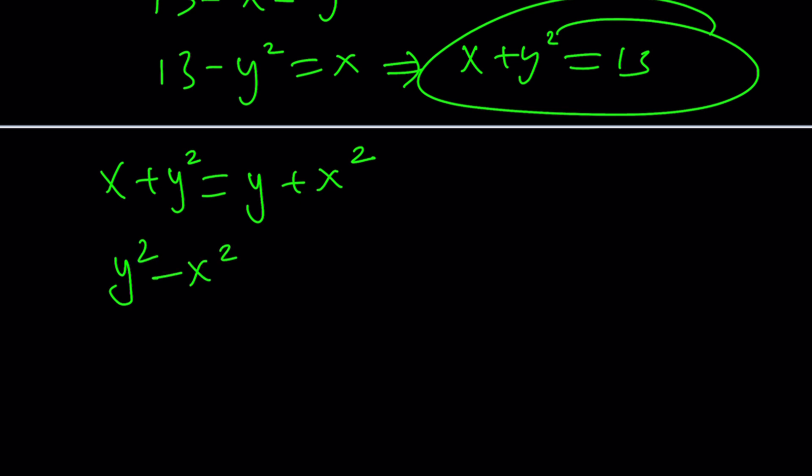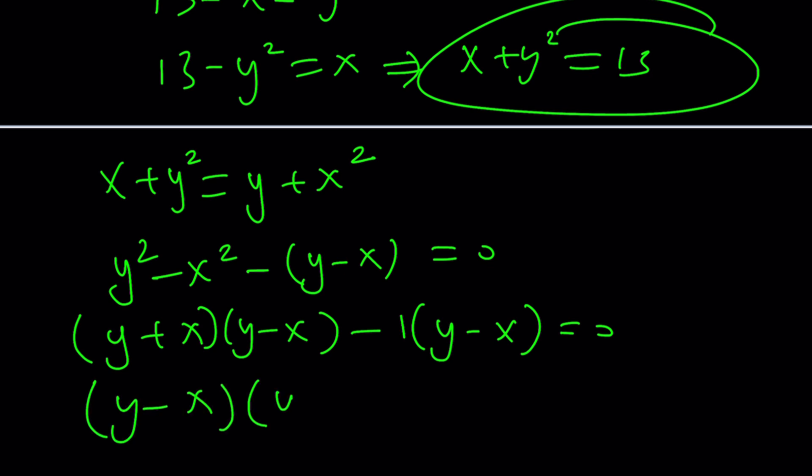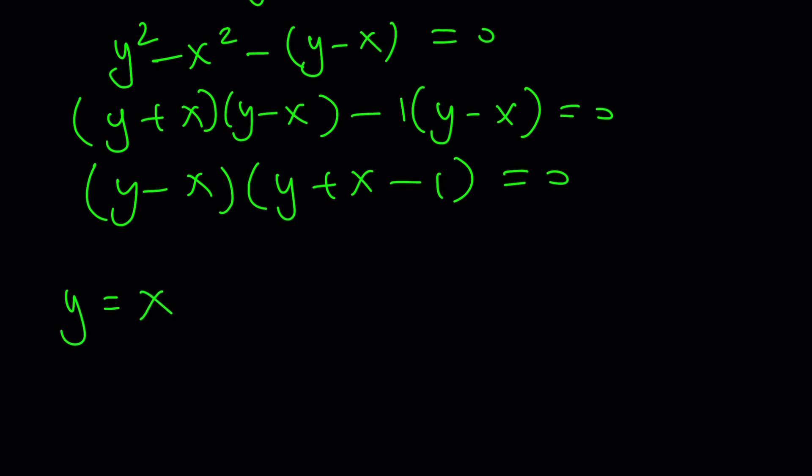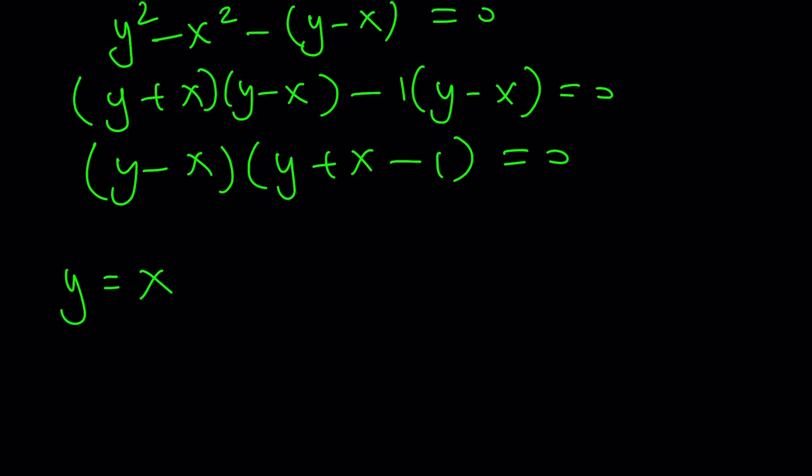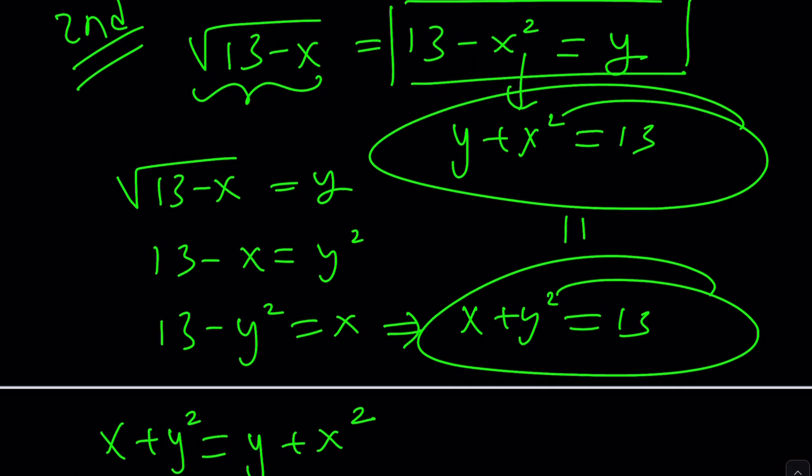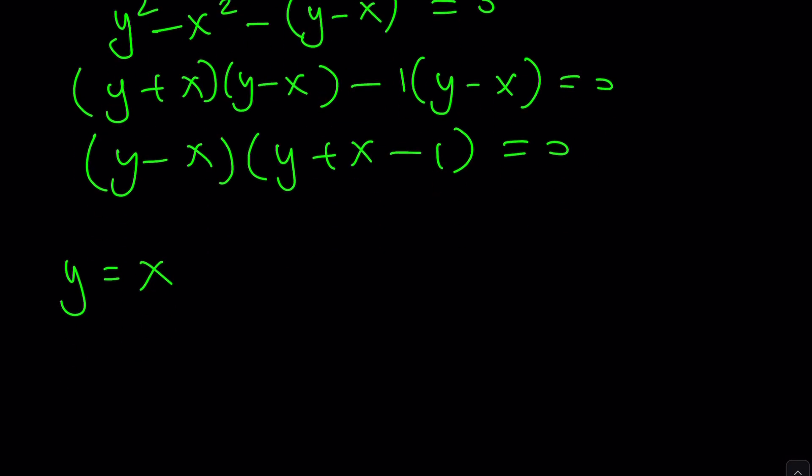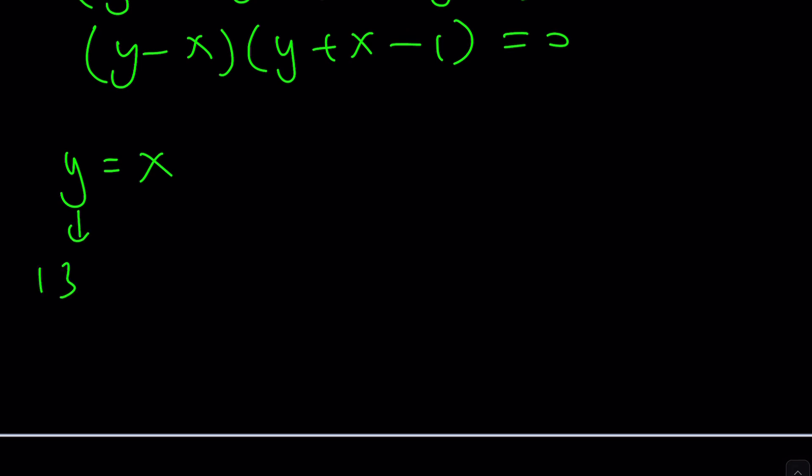y squared minus x squared minus y minus x equals zero. We can factor this using difference of two squares, and this can be factored as well. y minus x is a common factor, and we get y plus x minus 1 is another factor. This indicates y equals x, but what is y? y is something we invented. So we get y equals x. y is 13 minus x squared. So 13 minus x squared equals x, and that gives us x squared plus x minus 13 equals zero.